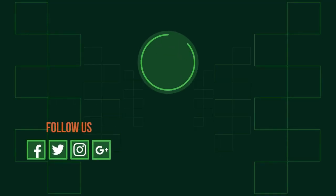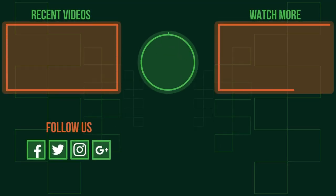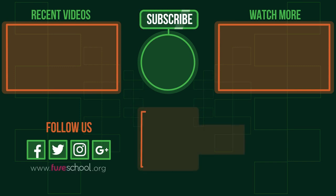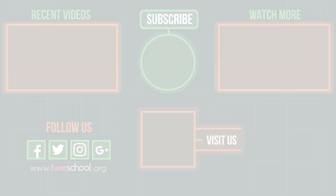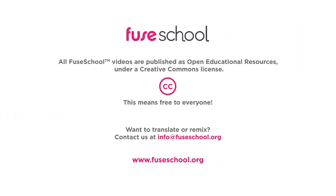So that's the end of frequency tables. They're very useful for collecting data together to make it much easier to handle. We can then calculate averages or draw different graphs from them, like histograms, which we'll look at in another video. If you liked the video, give it a thumbs up and don't forget to subscribe. Comment below if you have any questions. Why not check out our Fuse School app as well. Until next time.